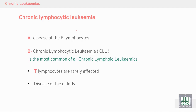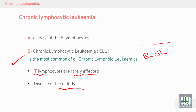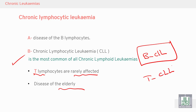Chronic lymphocytic leukemia is a disease of B lymphocytes — most cases affect B lymphocytes, with few cases involving T lymphocytes. It is a disease of the elderly, typically around 70 plus or minus 10 years. B-CLL is the most common of all chronic lymphoid leukemias. T cells can give rise to T-CLL, but B-CLL is far more common than T-CLL.